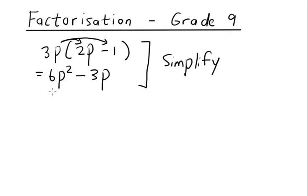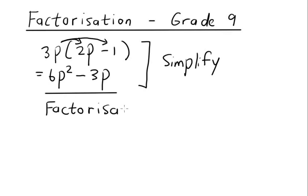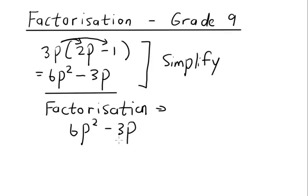Now with factorization, it's where they are giving us this particular answer. When it comes to factorization it's as if we are starting with an answer. So they give us a sum and say factorize the following. You've got 6p squared minus 3p. The first type of factorization is called common factor factorization. What do we mean by common factor? It means we take out the highest common factor.